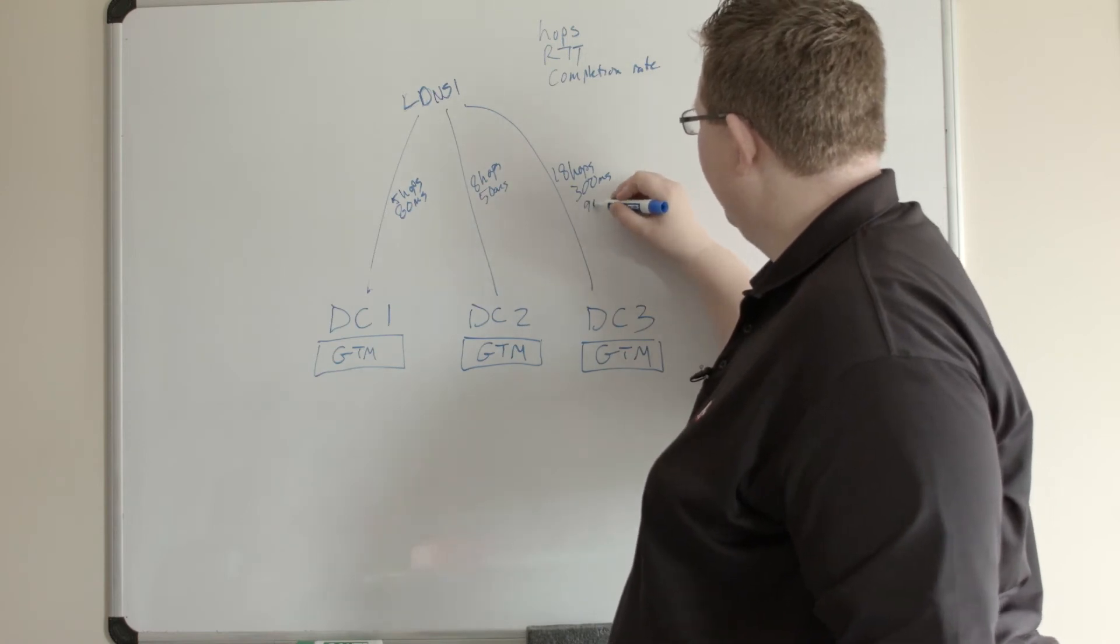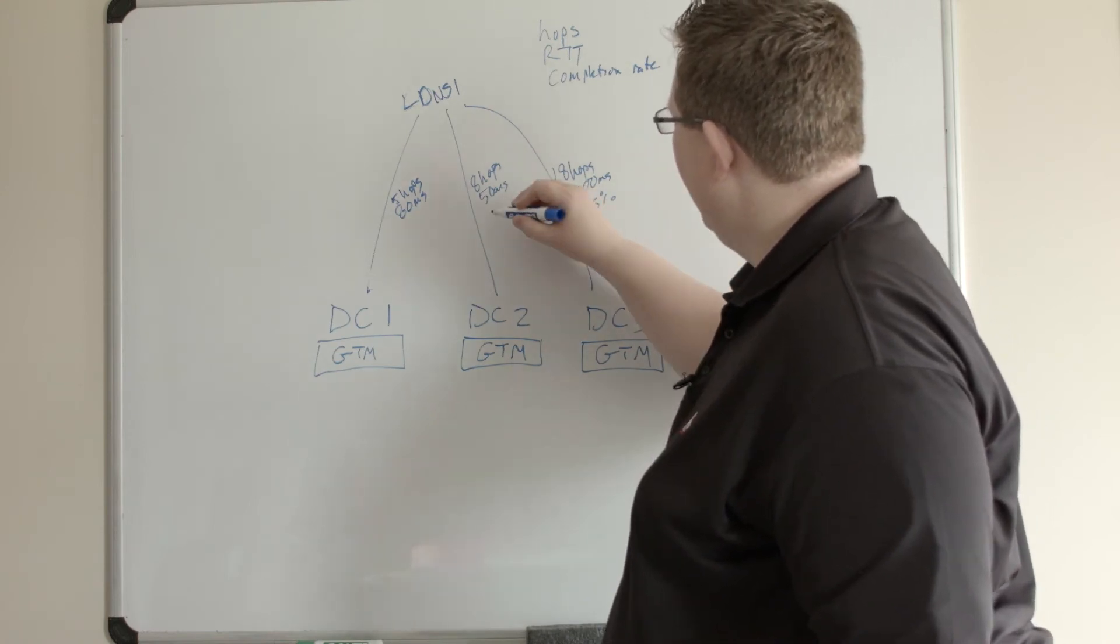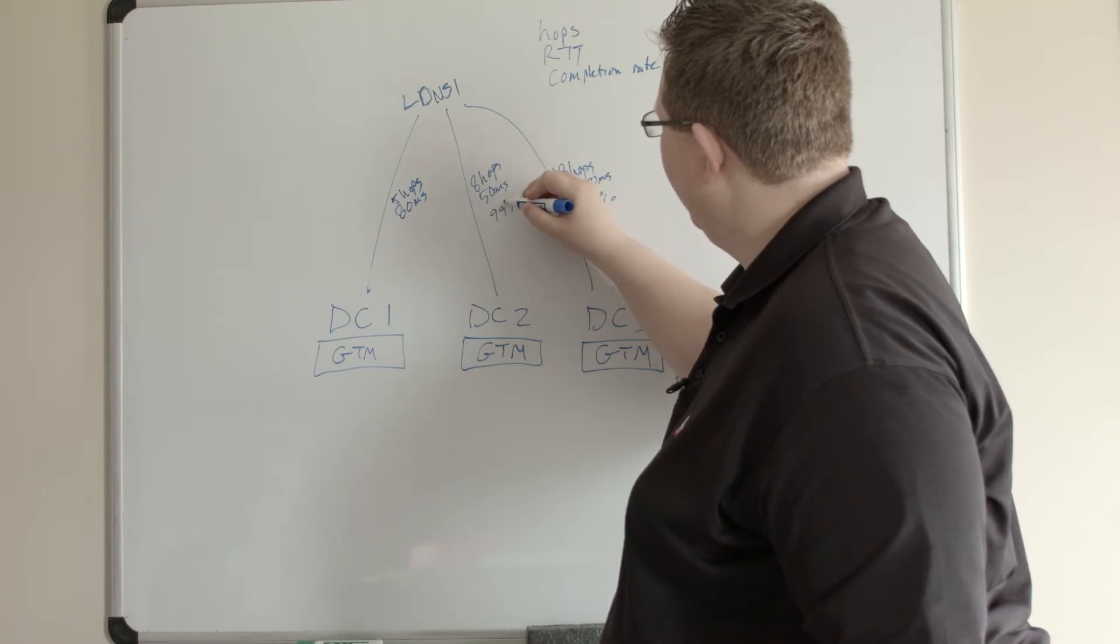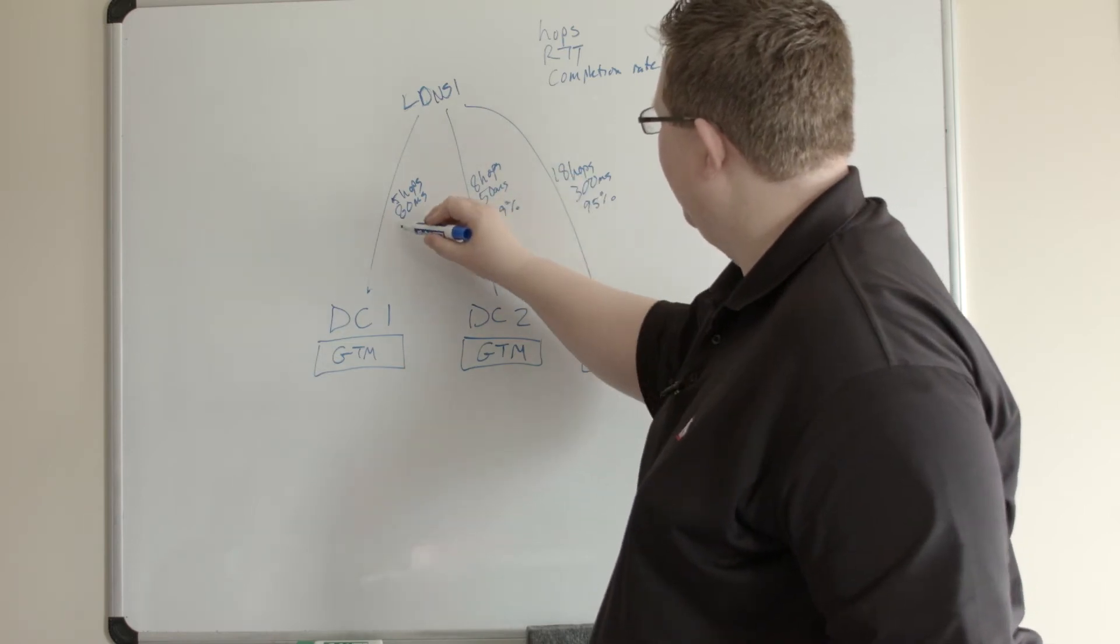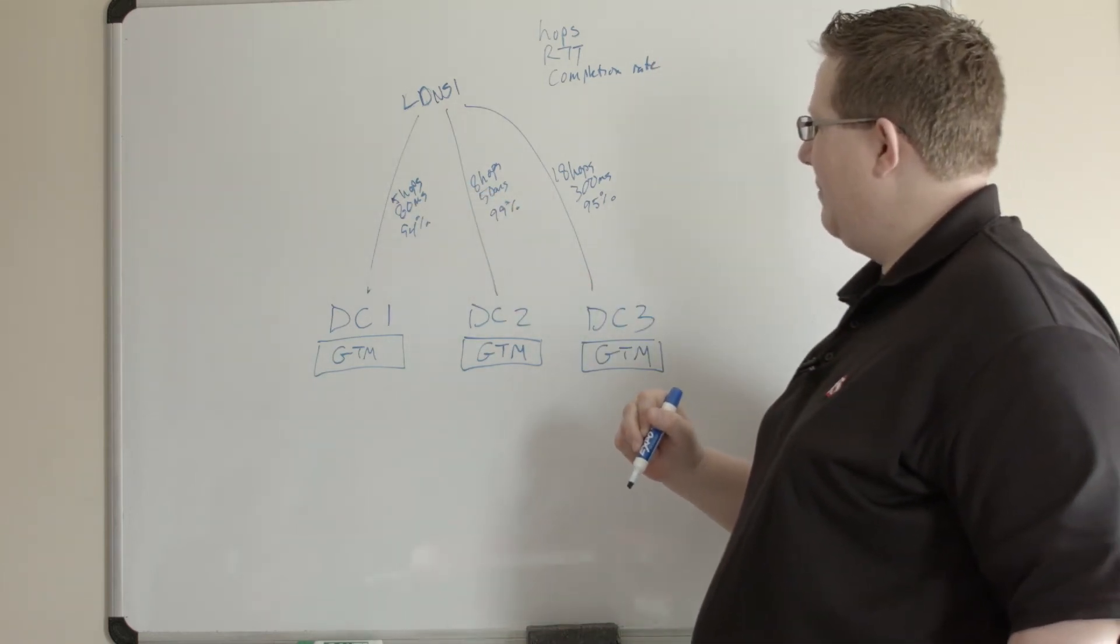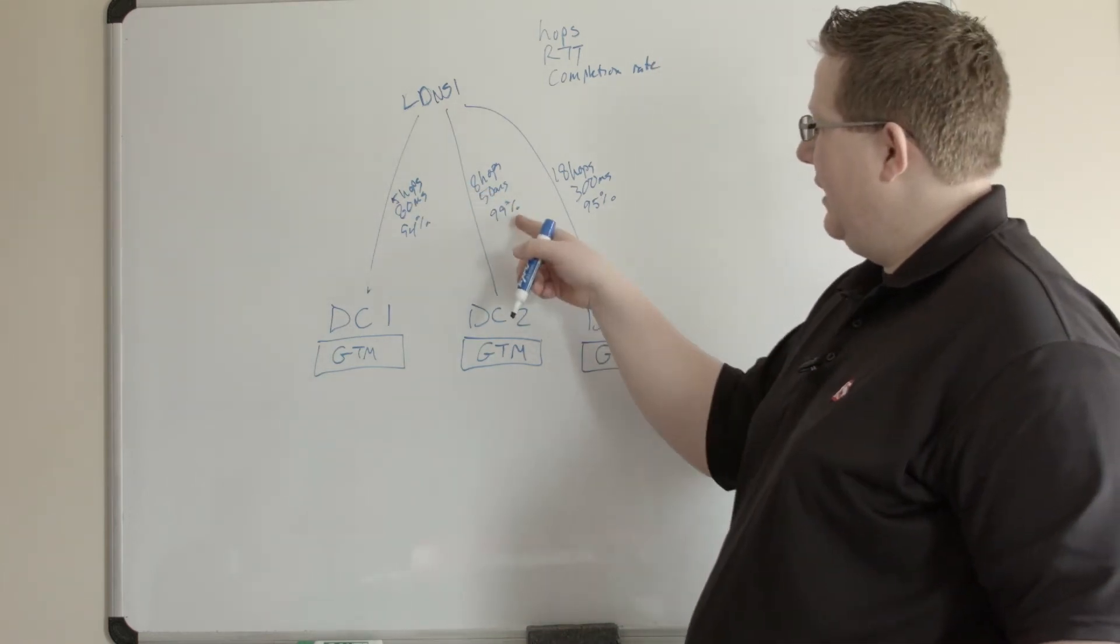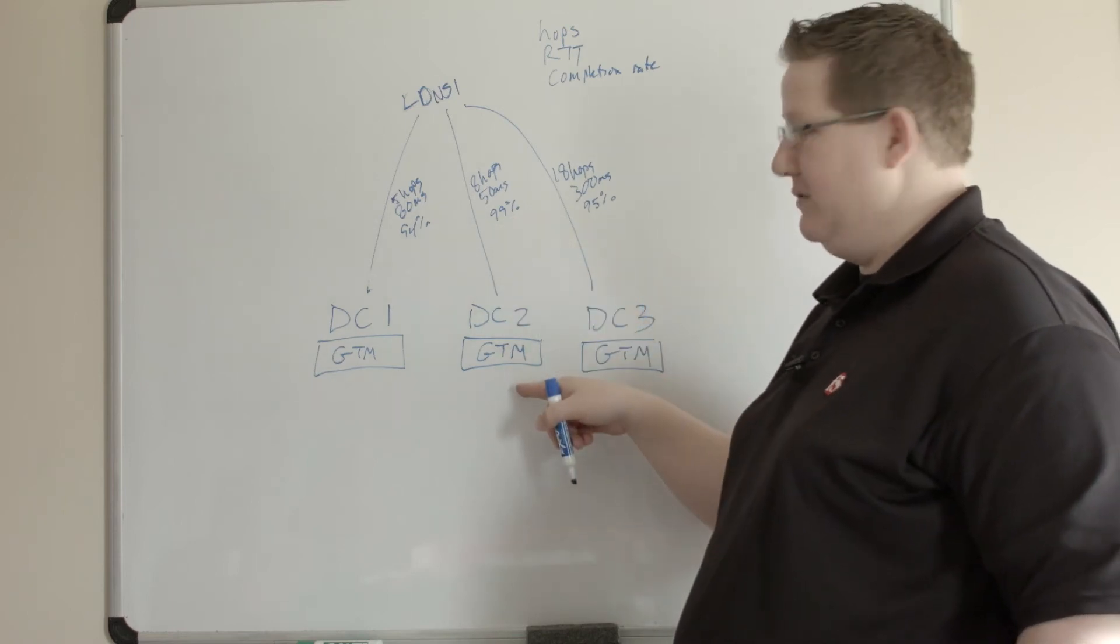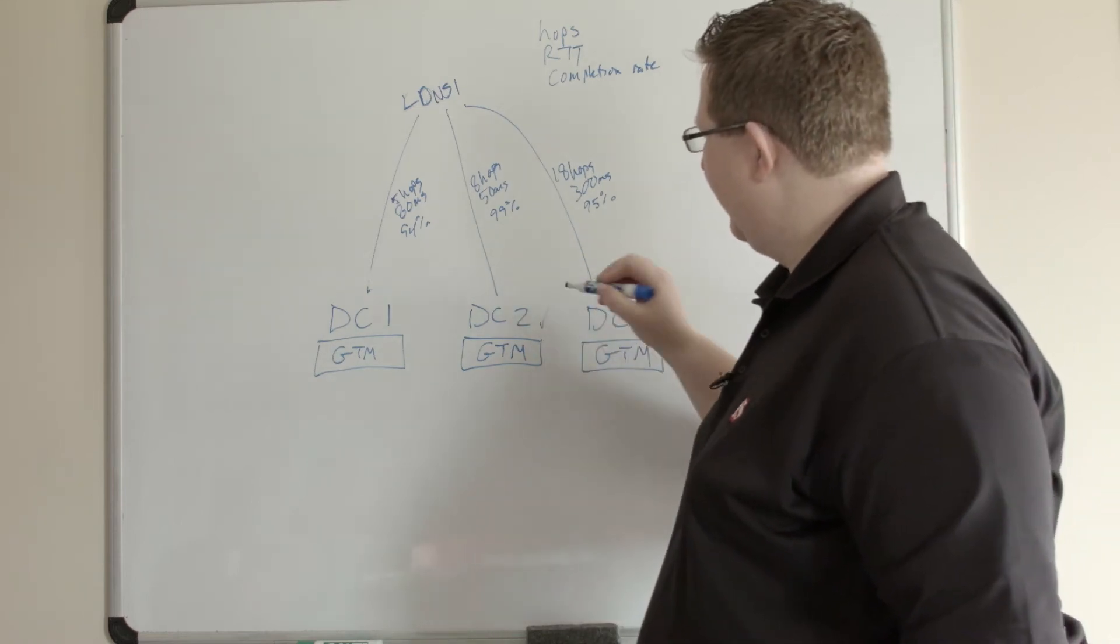If my completion rate is, say, it's 95% here and it's 99% here, but maybe I'm at 94% to this one, then my best completion rate is this middle data center, data center 2, and it's going to check that.